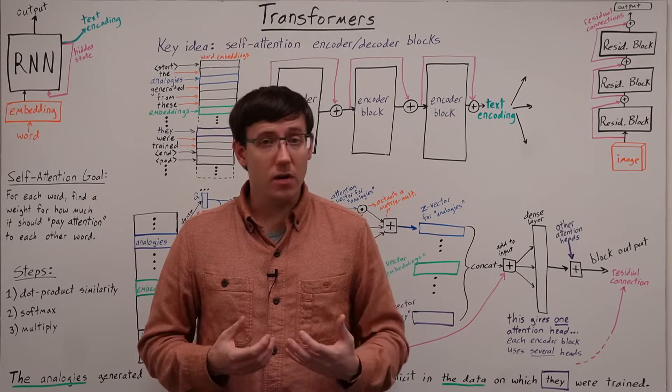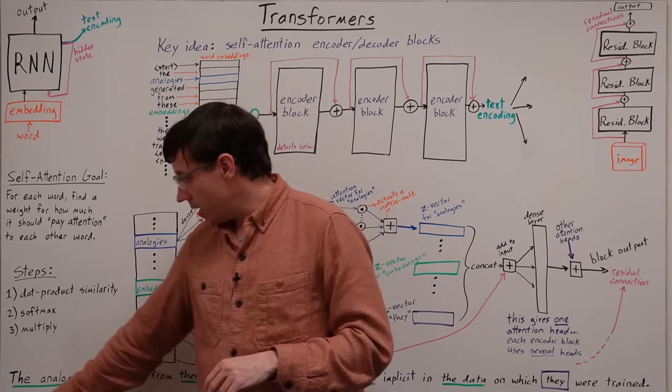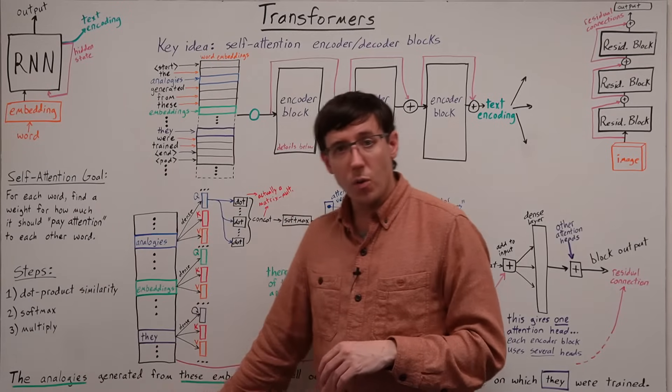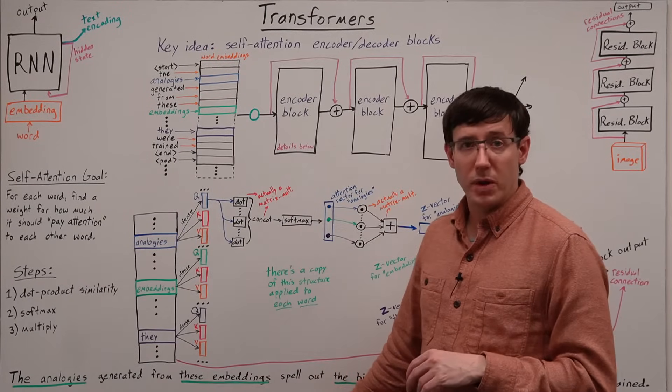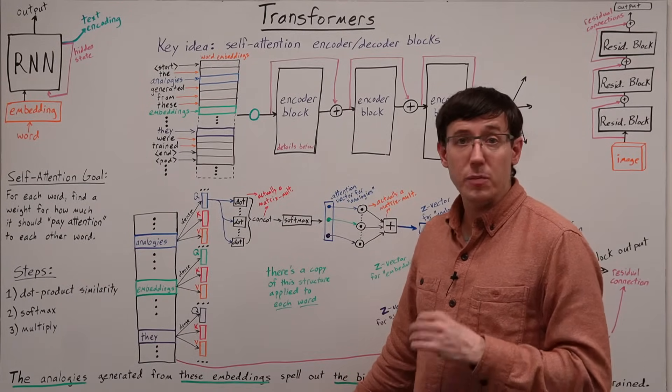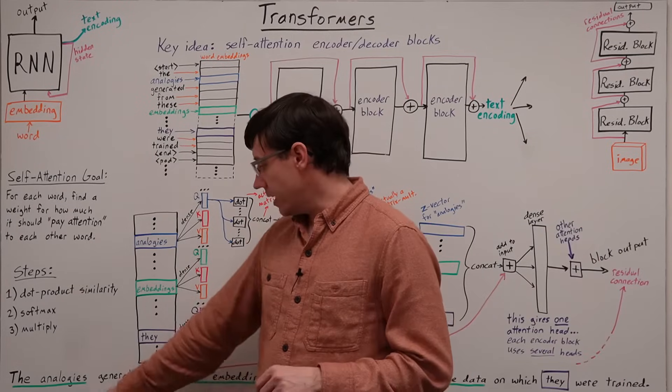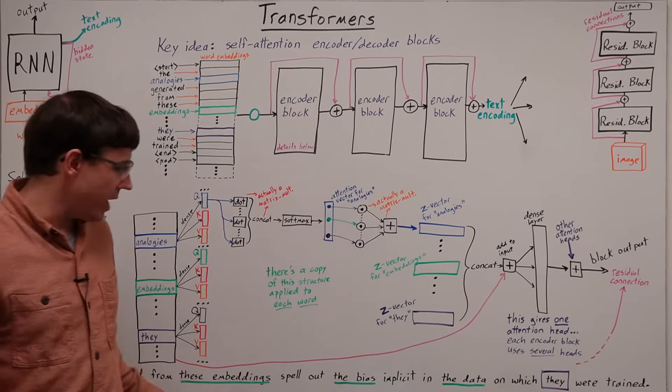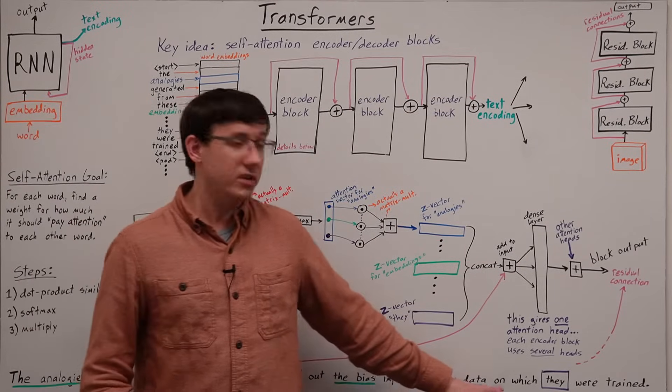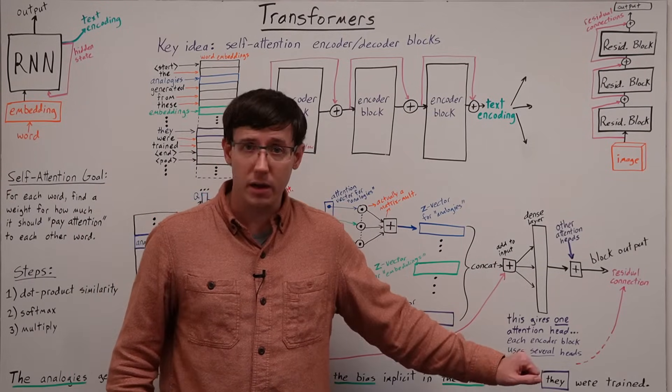As an example of what we mean, consider this sentence from one of my favorite deep learning papers on debiasing word embeddings. When we read the sentence, the analogies generated from these embeddings spell out the bias implicit in the data on which they were trained.